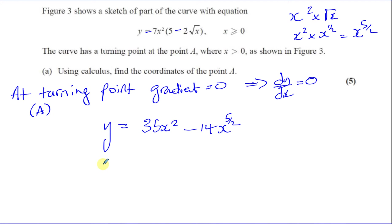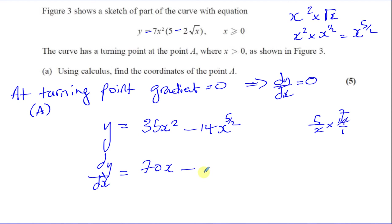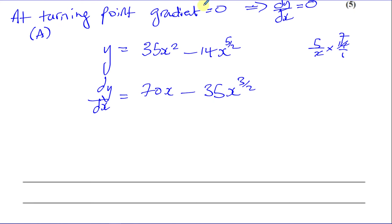We want to find dy/dx, so we differentiate this function. Differentiating gives us 70x — then 5 over 2 times 14 is 35, so that's minus 35x. And 5 over 2 minus 1 is 3 over 2. So dy/dx equals 70x minus 35x to the power of 3 over 2. Since the gradient is zero, we set dy/dx equal to zero: 70x minus 35x to the power of 3 over 2 equals zero.